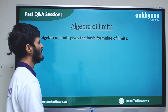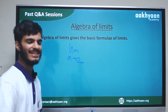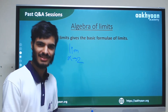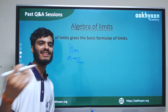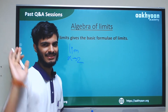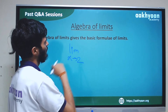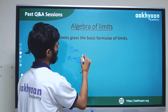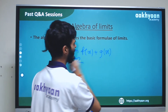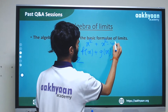For example, I will give you a function. The limit of x tends to 2. We can apply algebra of limits: limit x tends to 2 of f(x) plus g(x). For instance, x squared plus x squared minus 4.